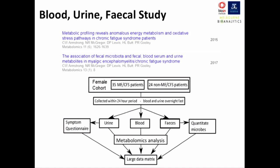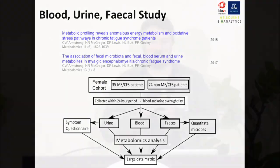From the fecal samples, we also looked at the microbes — fresh quantitation of the microbes inhabiting the colon at the time. We then did metabolomics analysis on the urine, blood, and fecal samples. All together, we put this into a large data matrix, which we could assess as a whole but also in individual parts.